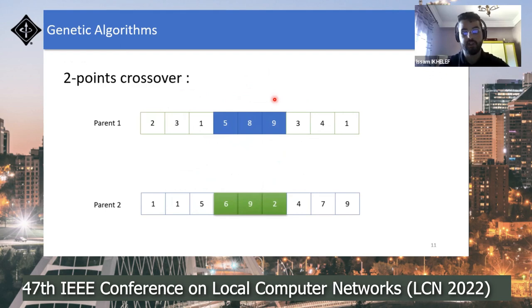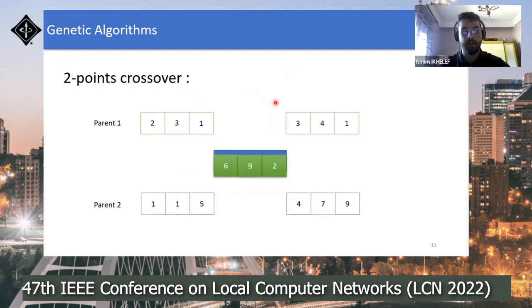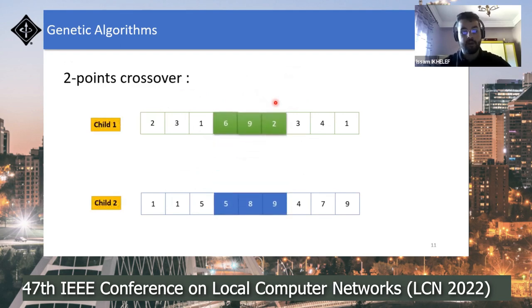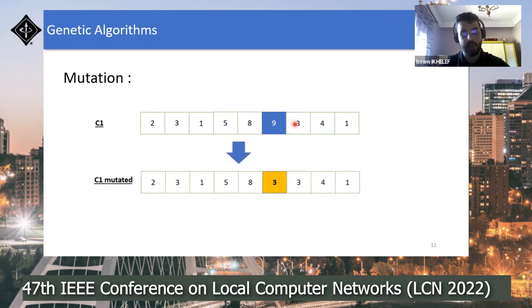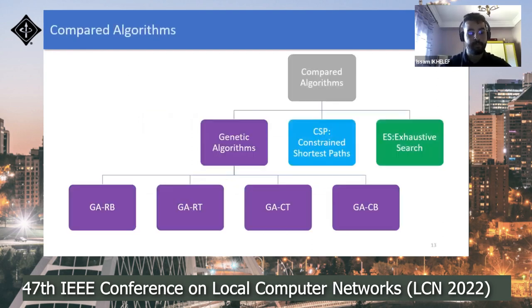For child generation, we use two-point crossover, where the two points are randomly selected among the genes. For mutation, we randomly choose a gene — for example, gene nine — then randomly replace the server index s with another server s-prime drawn randomly from a list of servers. Concerning the selection of the next population, we use two different procedures explained on the next slide.